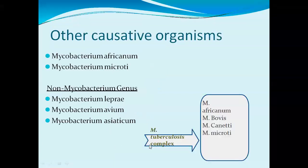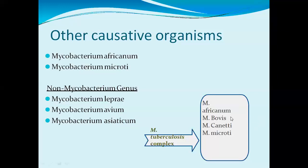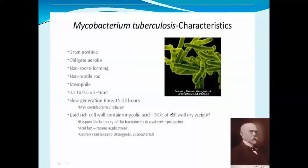Mycobacterium tuberculosis causes infection in human beings, while Mycobacterium bovis causes infection in animals. Other causative organisms include Mycobacterium africanum, Mycobacterium microti, and non-mycobacterium species such as Mycobacterium leprae, Mycobacterium avium, and Mycobacterium gasticum. The Mycobacterium tuberculosis complex includes Mycobacterium africanum, Mycobacterium bovis, Mycobacterium canetti, and Mycobacterium microti.